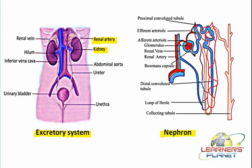Inside the capsule, filtration takes place. The capillaries have a very thin wall, and from this thin wall the blood is filtered out. Most of the things are filtered out from here and the remaining blood passes out further into the efferent arteriole.